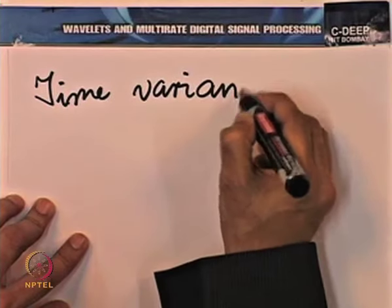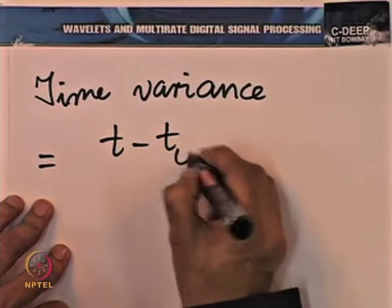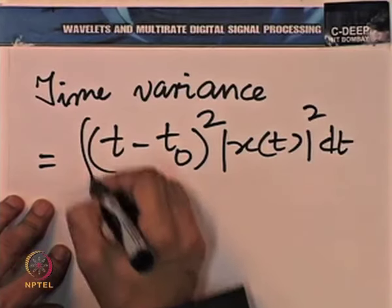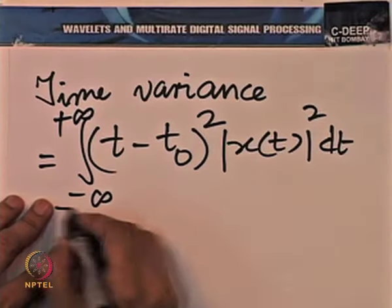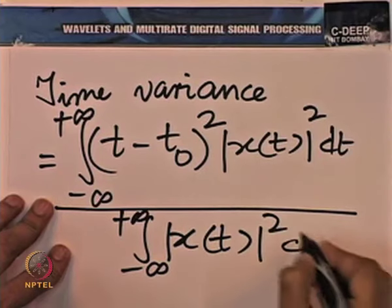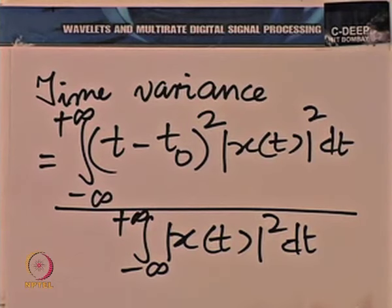From the time center we define the time variance. The time variance is given by the integral of (t − t₀)² |x(t)|² dt integrated over all time, divided by the integral of |x(t)|² dt. Essentially this time variance is the variance of a density constructed out of |x(t)|² divided by the norm of x squared. Similarly, we can talk about the frequency center and the frequency variance.